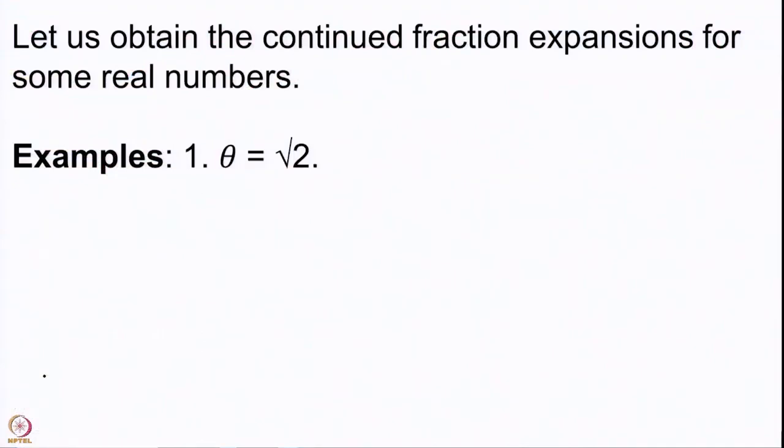Now we are going to do some computations. We have not computed continued fraction expansions for any number except the golden ratio. So let us start with some of the simplest numbers. We start with θ = √2 and compute its continued fraction expansion.